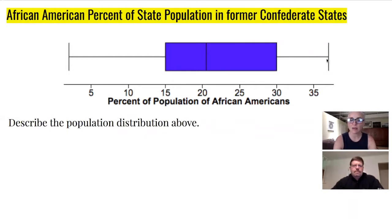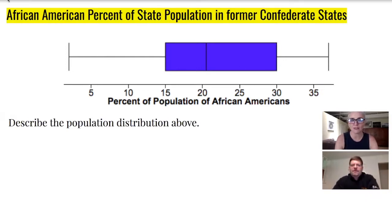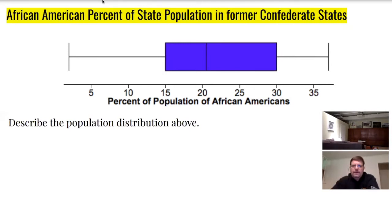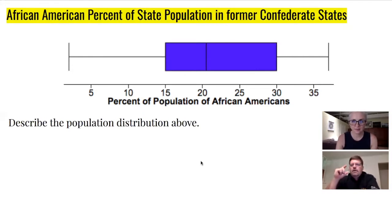If you were asked to describe the population distribution, we use those 'BS' words — center, spread, shape, and be specific. When looking at a box and whisker plot, the center will of course be the median. There's a center at about 21. There are no unusual points. I always want to get my 'B specific' part in early — so I would say the median was approximately 21% of the African American population.